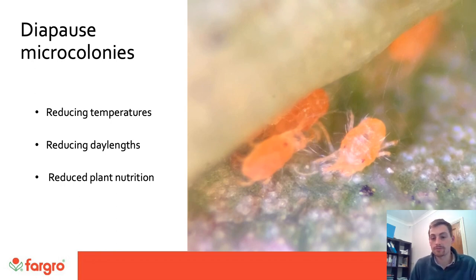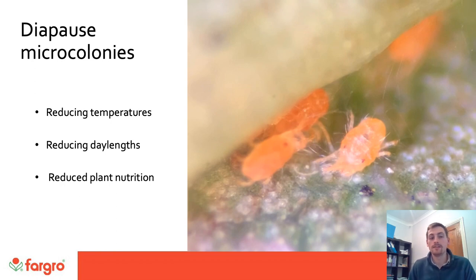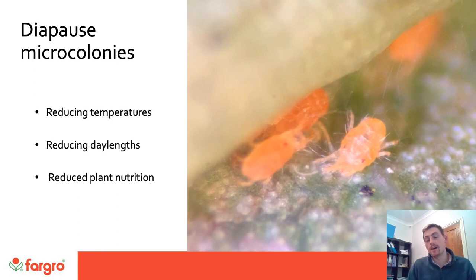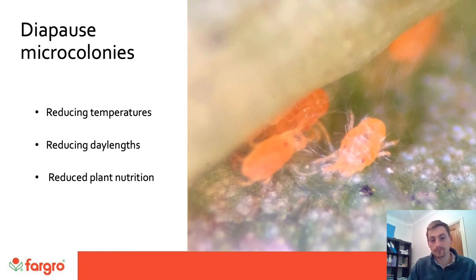The native predators are often quite useful for targeting these populations, as it's in the winter months when it's cold. The native predators are hardier to these colder temperatures and are often able to target these micro colonies within diapause. They're able to emerge out of diapause at the same time, so you can get some really early preventative control before the spider mite colonies have a chance to establish themselves properly within the crop in the spring.